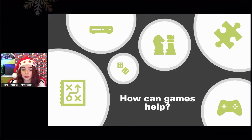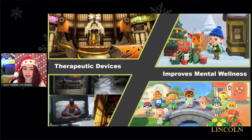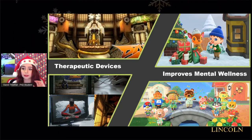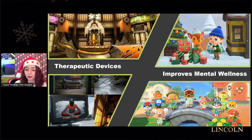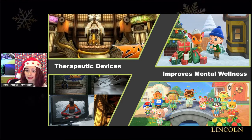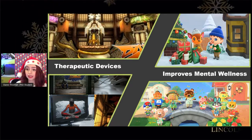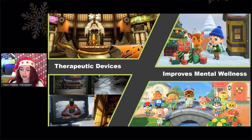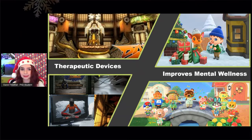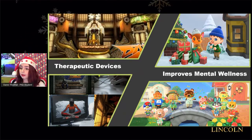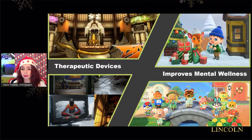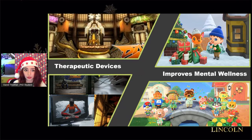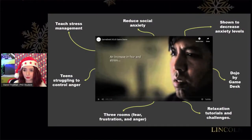Moving on to how games have helped improve people's mental health. My research focuses on two categories: therapeutic devices or therapeutic interventions, which directly improve mental health and help build coping mechanisms to deal with anxiety and fear; and games that directly improve mental health through playing. There's recent research from the University of Oxford about Animal Crossing showing that playing it can help improve your mental health. I have a video about two of these — on the left there's the therapeutic device called Dojo.